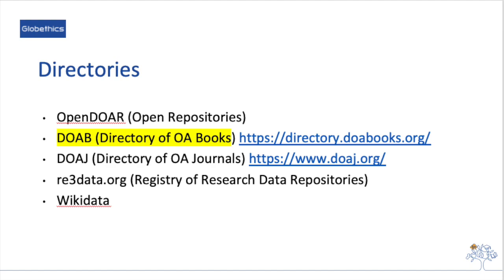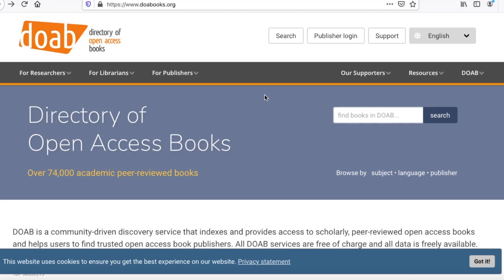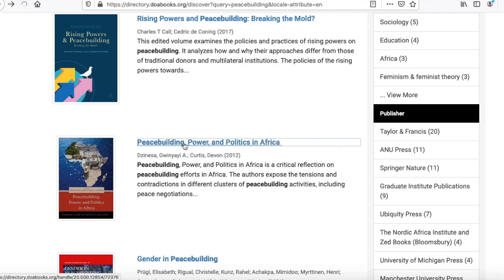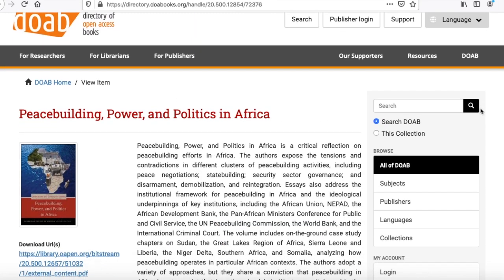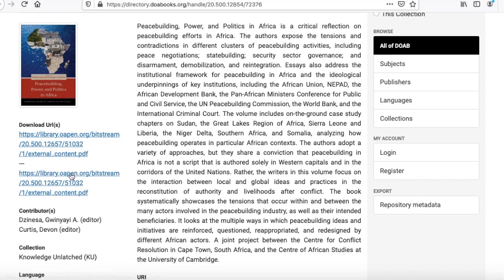You may continue with exploring the directories, such as OpenDOAR — the Directory of Open Access Repositories — the Directory of Open Access Books, the Directory of Open Access Journals, the Registry of Research Data Repositories, or Wikidata, which are rich and useful resources to search in. Let's check DOAB, the Directory of Open Access Books. In the search bar, type Peace Building. Let's click on Peace Building, Power and Politics in Africa, and you can download it from the link here.